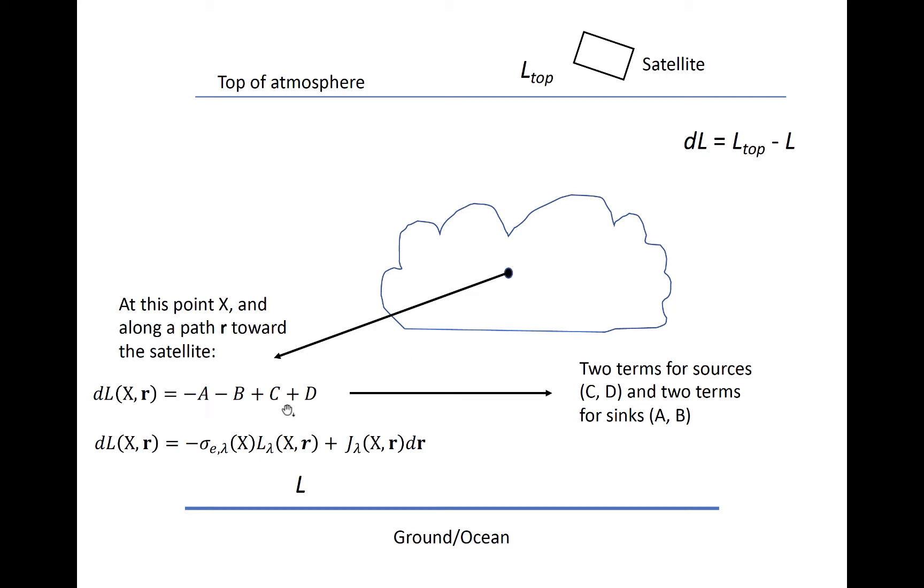A, B, C, and D simply represent sources and sinks of radiation. In its most simplistic form, this is Schwarzschild's equation, however A, B, C, and D by themselves aren't particularly informative.